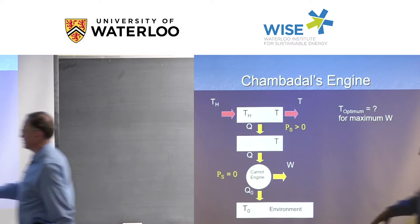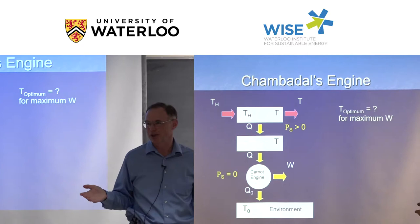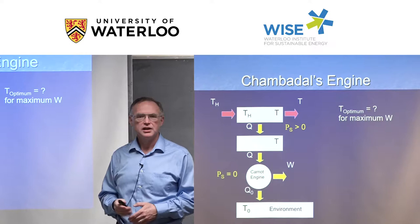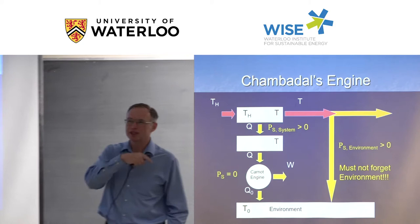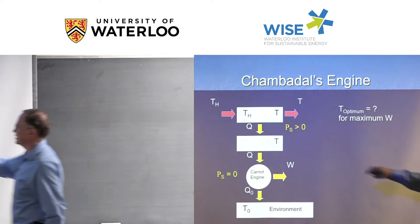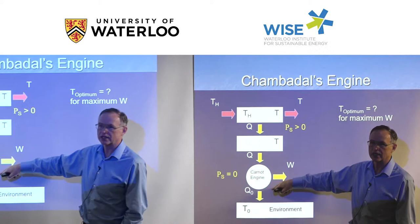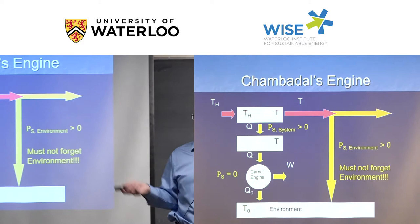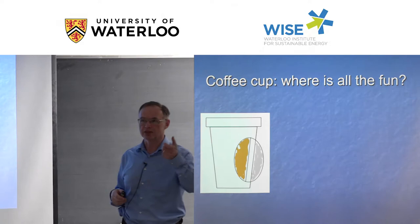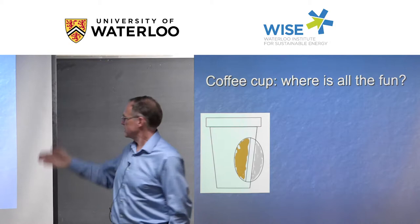The Chambadal-Novikov engine is a classic exam problem: an ideal perfect engine with a heat exchanger that has irreversibilities and exergy destruction. Students are asked to find the maximum work the system can give. Often they get it wrong because when minimizing entropy production or maximizing work output, they forget the entropy production occurring in the environment from the heat rejected. The heat rejection must be at a finite temperature — not the environment temperature (or you get no work out) and not the high temperature (or you get no heat transfer). There's actually an optimum, and optimizing without considering the environment gives the wrong answer.